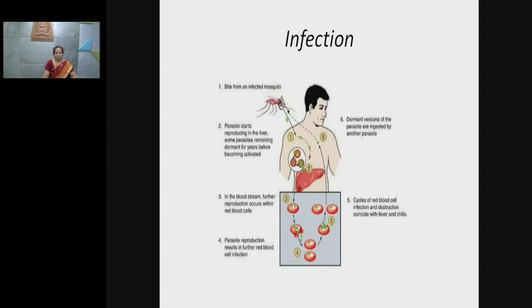After this, the dormant version of the parasites can be taken up by another mosquito that bites the infected person. Now this person is already infected, so when another mosquito comes and bites and sucks blood, the developed parasites enter into the body of that mosquito. It takes two hosts to complete the life cycle — it is a digenic parasite: one host is man and the other is the mosquito.